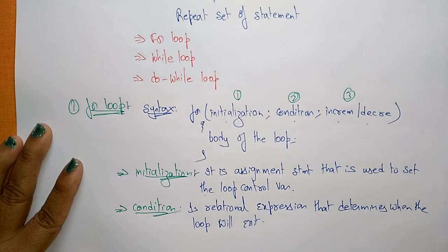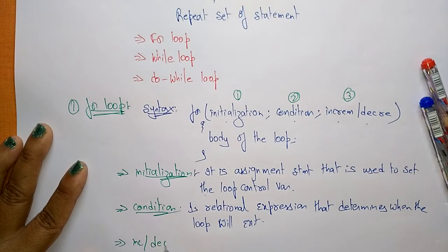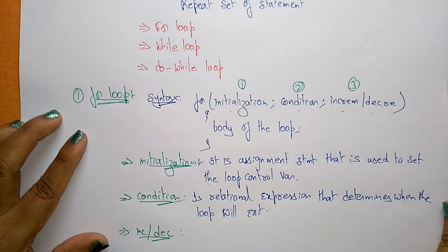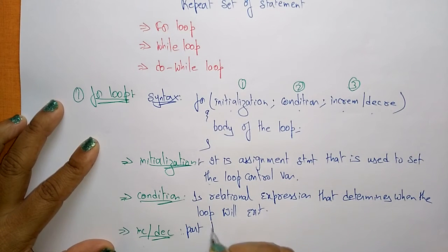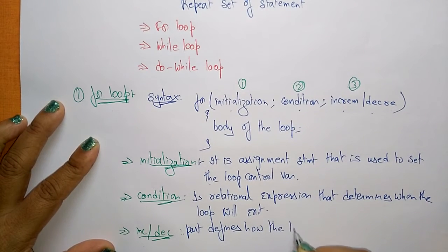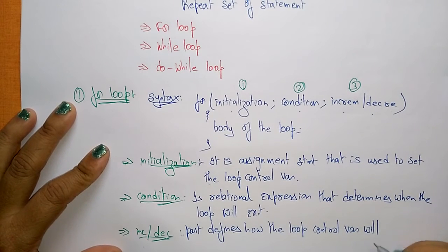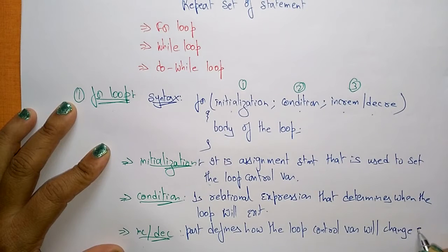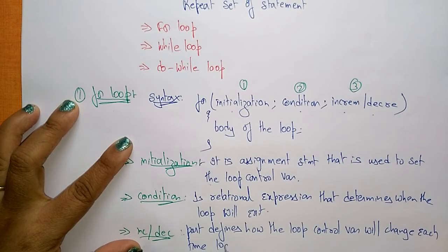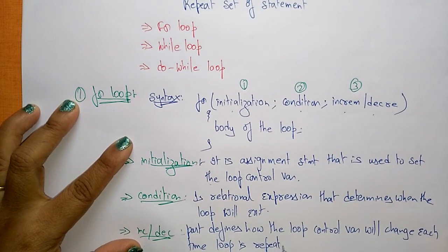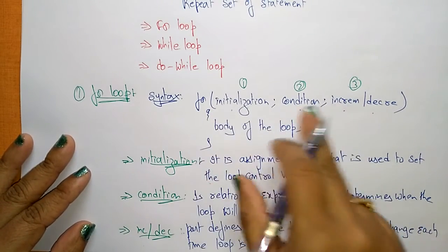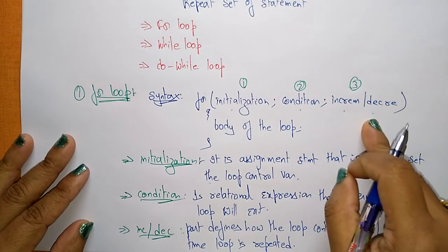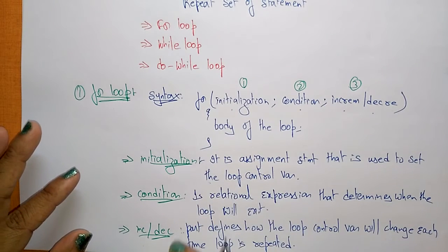Next is the increment and decrement operator. Increment means increment by one value; decrement means decrement by one value. The increment and decrement operator part defines how the loop control variable will change each time the loop is repeated. So within the for loop you have three parts: initialization, condition, and increment or decrement operator.